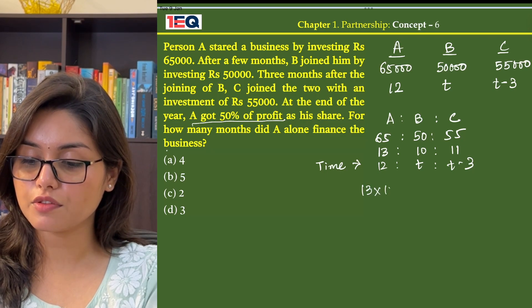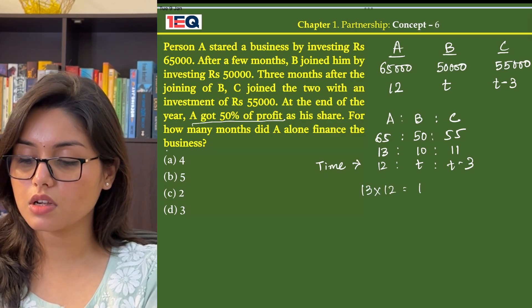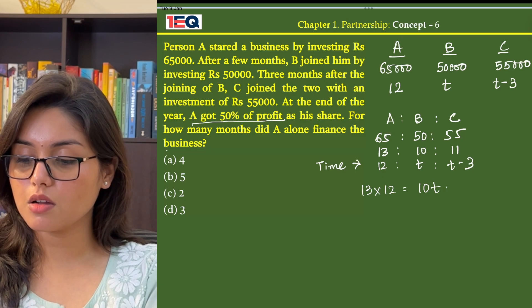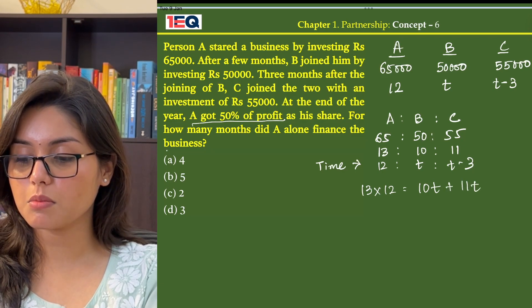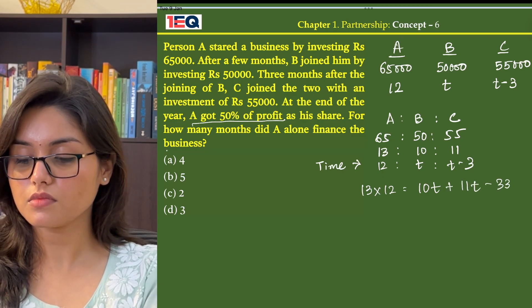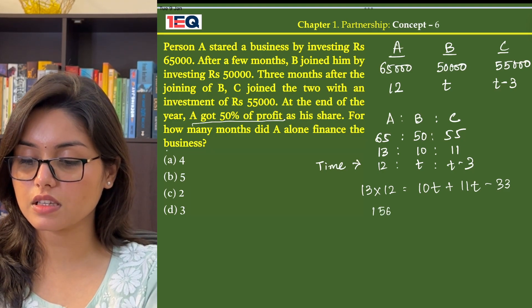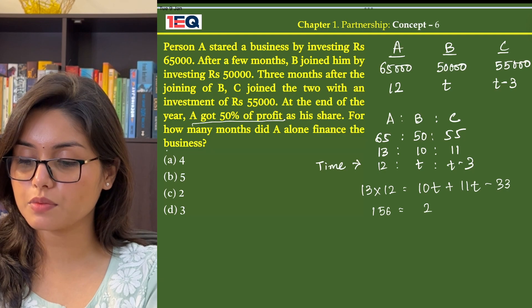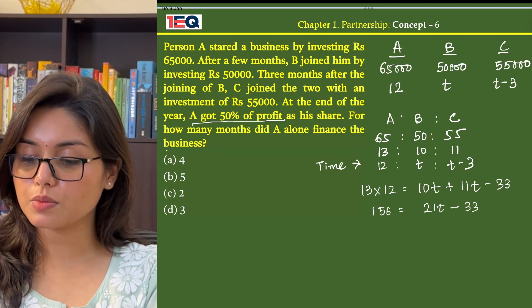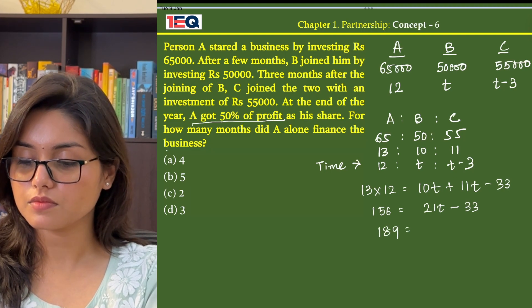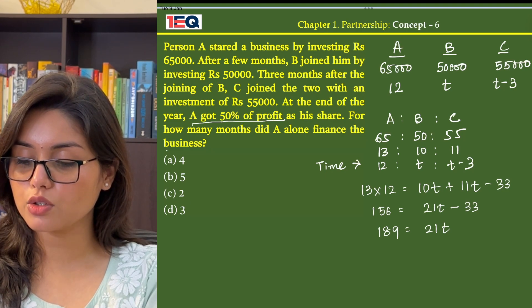So, 13 into 12 will be equal to 10T plus 11(T minus 3). That gives us 156 equals 21T minus 33. Therefore, 21T equals 189, and from here we get the value of T as 9.